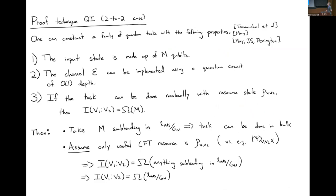There is actually a way of arguing for this using quantum information reasoning without appeal to gravity. You construct a family of quantum tasks with nice properties: the input state is made up of m qubits, the channel can be implemented using a quantum circuit of order-one depth (so as you add more qubits you don't have to make the circuit deeper — a low-complexity task), and furthermore you can prove that if this task can be done non-locally with a resource state on b1 and b2, then the mutual information in that resource state must scale at least as the size of the input system in the limit of large input.